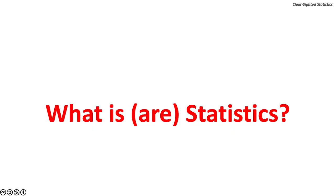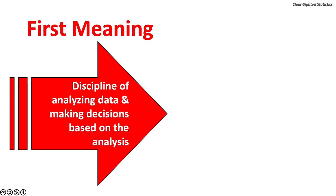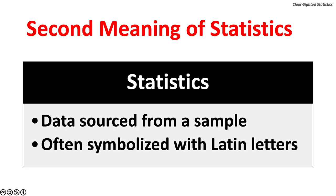What is statistics, and what are statistics? The word statistics has two distinct meanings. As a singular noun, statistics is the discipline of analyzing data, reporting the findings, and making appropriate decisions based on the analysis. As a plural noun, statistics are data derived from samples — typically symbolized with Latin letters.